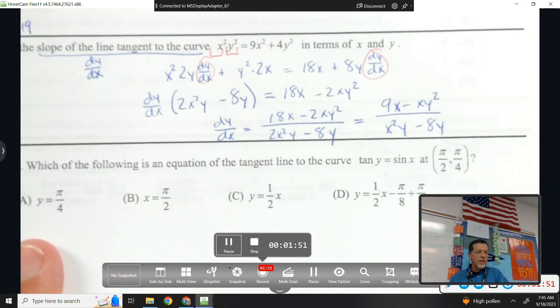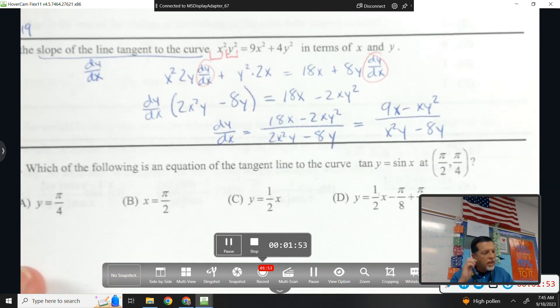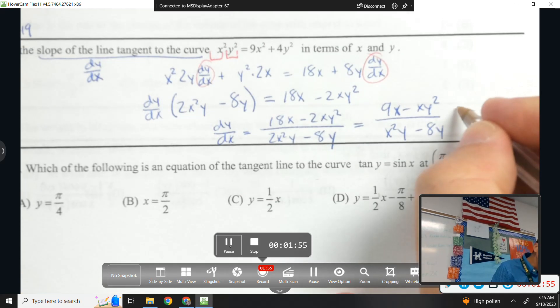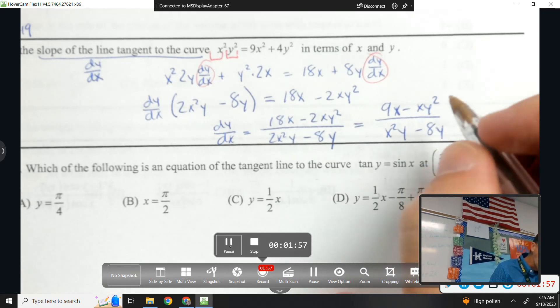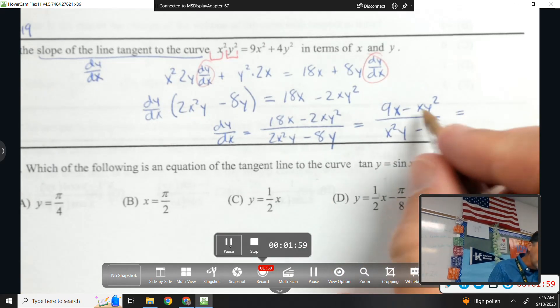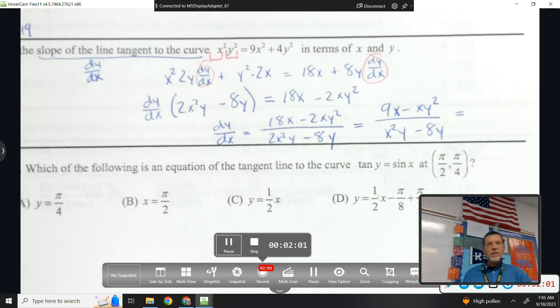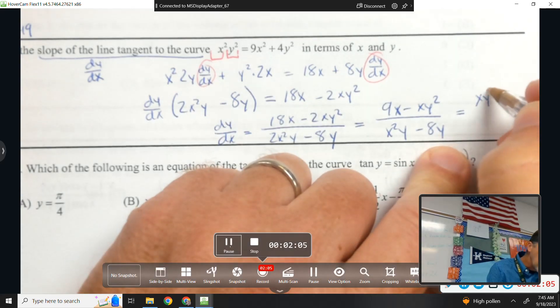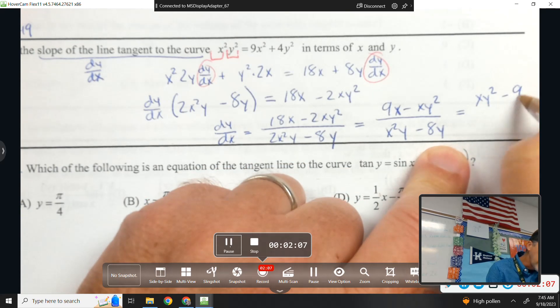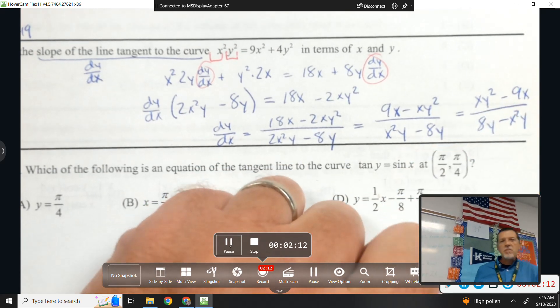As you're working these, depending on which side you move things to, you need to be able to see that this would be the same thing as... So if you multiply everybody by negative 1, you can switch the order. So if you got xy squared minus 9x over 8y minus x squared y, that's the same thing.